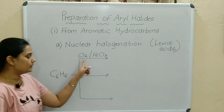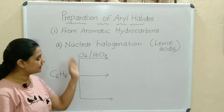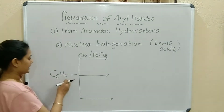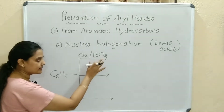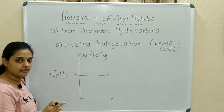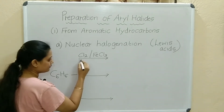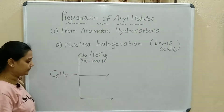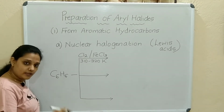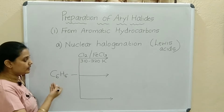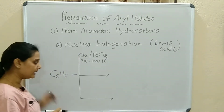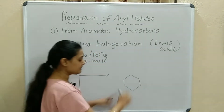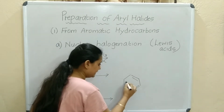The Lewis acid acts as a catalyst here, and the temperature for this reaction is 310 to 320 Kelvin. Benzene has 6 carbons and 6 hydrogens with alternate double bonds. One hydrogen of the benzene ring will be substituted by one Cl from Cl2.